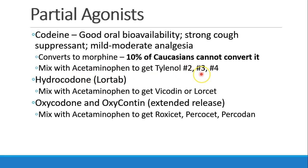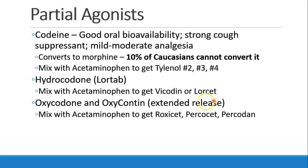Codeine mixed with acetaminophen is called Tylenol number two, number three, or number four — usually you'll see Tylenol number three — and these are just different ratios of acetaminophen and codeine. Hydrocodone, also called Lortab, mixed with acetaminophen is called Vicodin or Lorcet. Oxycodone and Oxycontin are the exact same drug — Oxycontin is extended release over 12 hours and Oxycodone is immediate release. Mixed with acetaminophen, we get Roxicet, Percocet, or Percodan.